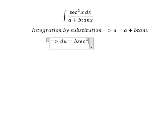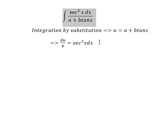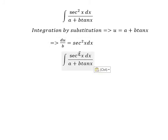Because we don't have the b in the numerator, we divide both sides by b. Now we change this integral: sec² x dx becomes du over b, and a + b tan x we change to u.